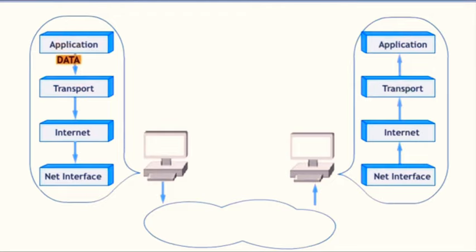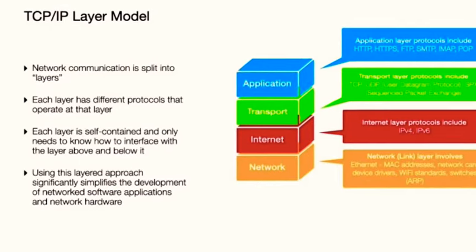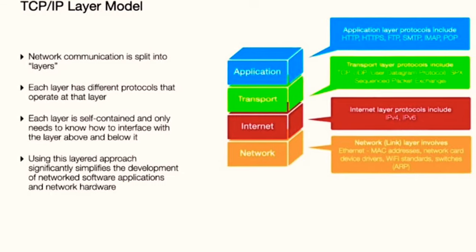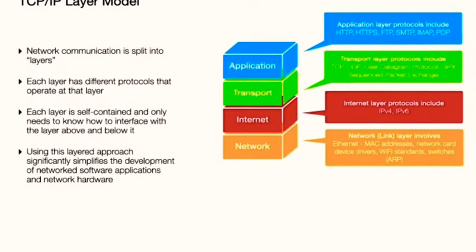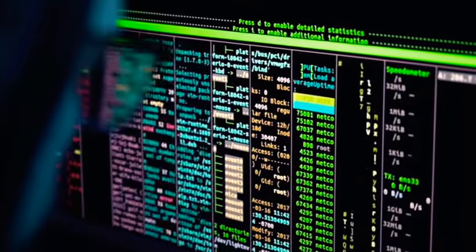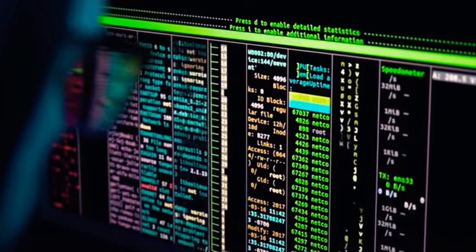Next up is the transport layer. This layer is all about ensuring reliable transmission of data — like a quality control manager checking that all data arrives safely at its destination and in the correct order. Protocols like the Transmission Control Protocol, or TCP, and the User Datagram Protocol, or UDP, operate at this layer. TCP ensures reliable delivery through a system of acknowledgements and retransmissions, while UDP provides a faster but less reliable service.